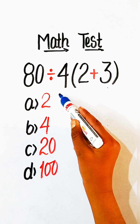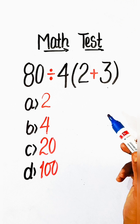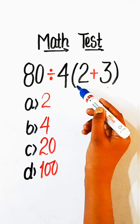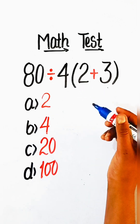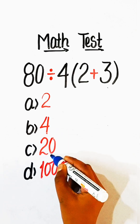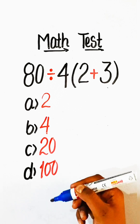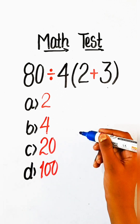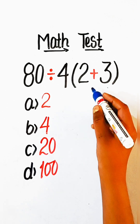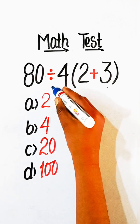Hello everyone, welcome back to my YouTube channel. In this video we will solve this basic math problem: 80 divided by 4 under bracket 2 plus 3 equals what? Option A: 2, Option B: 4, Option C: 20, Option D: 100. Try to solve it — let's solve it together.